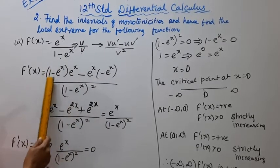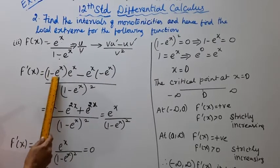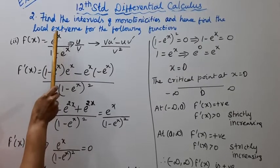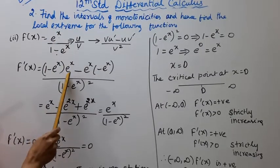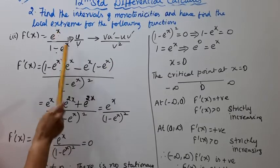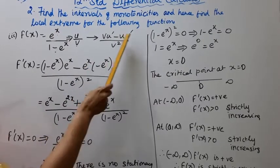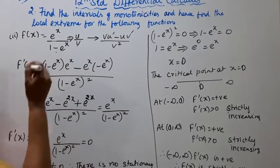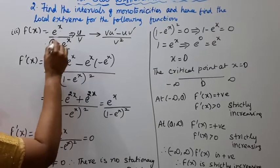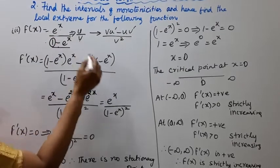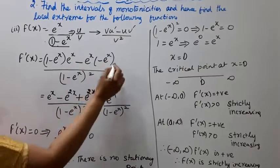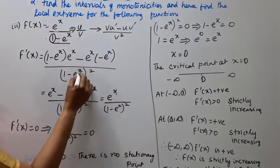v = (1 - e^x), and u = e^x. Differentiating u: u' = e^x. Then for v', differentiating 1 gives 0, and differentiating -e^x gives -e^x. So v' = -e^x. The denominator is v² = (1 - e^x)².